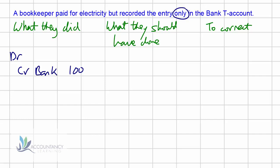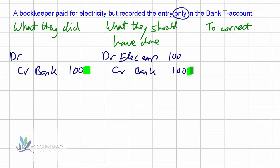What should they have done? They should have debited the electricity expense with 100 and credited the bank T-account with 100. To correct this, comparing the two columns we can see that the credit is the same in both — so no adjustment is needed there. But the debit to electricity expense just hasn't been done, so we need to do that. We can't have just a debit, so the credit would be to fix the suspense account.